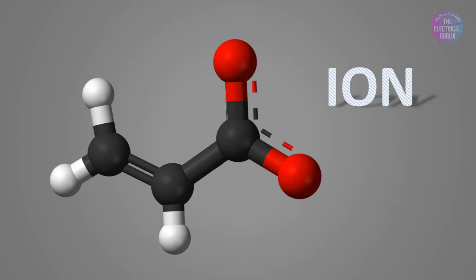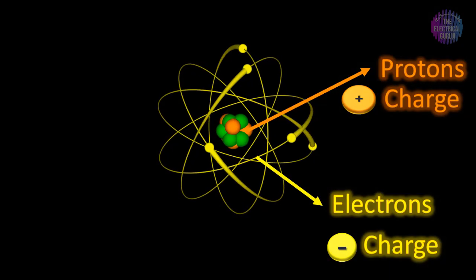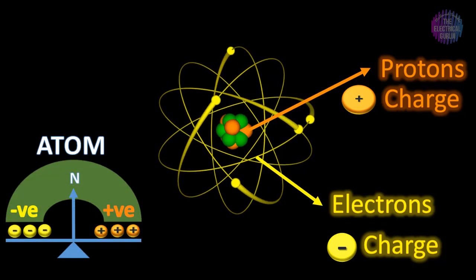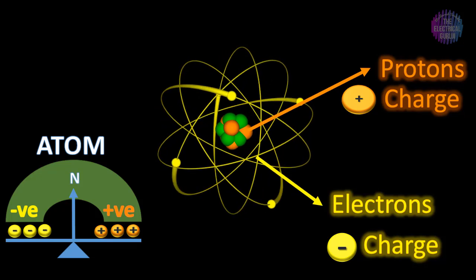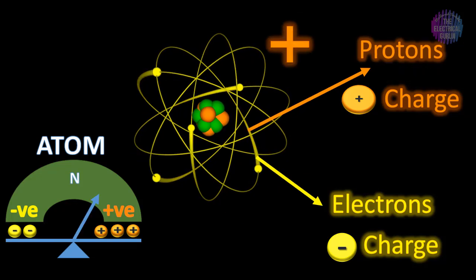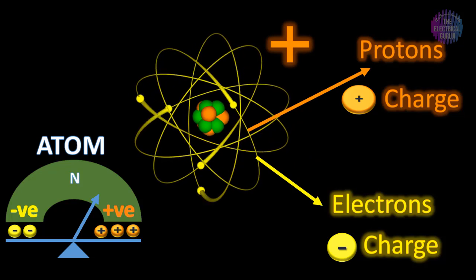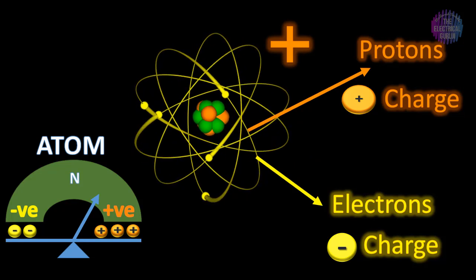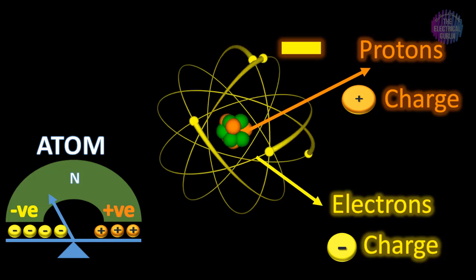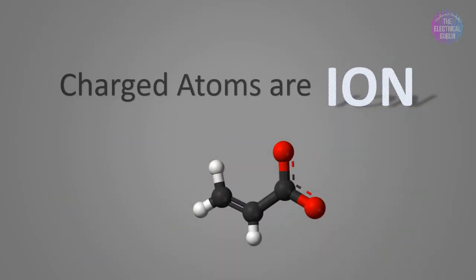Apart from protons and electrons, one more charged particle exists in nature called an ion. In normal conditions, the number of protons and electrons in an atom are equal, and they balance the total charge of the atom, keeping it in a neutral state. But if the number of electrons is less than protons, the atom becomes positively charged, or if protons are less than electrons, the atom becomes negatively charged. These charged atoms are ions, but ions have an even wider definition.